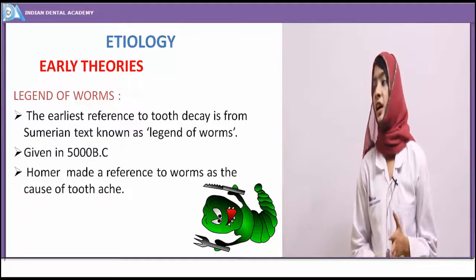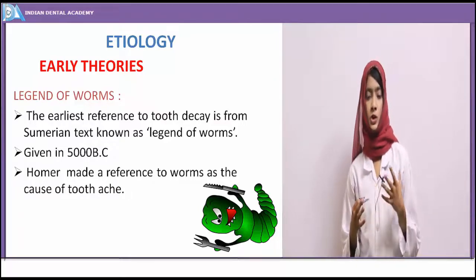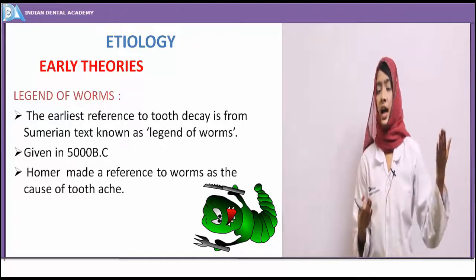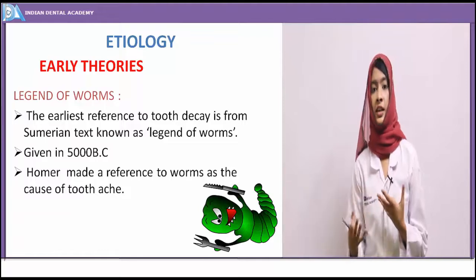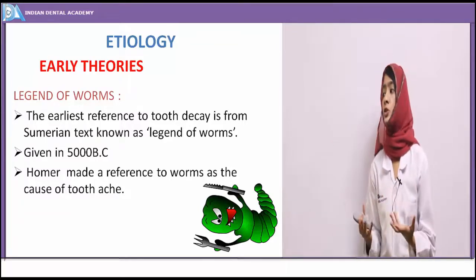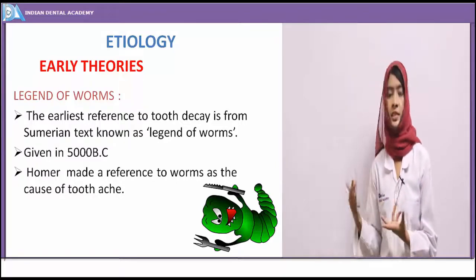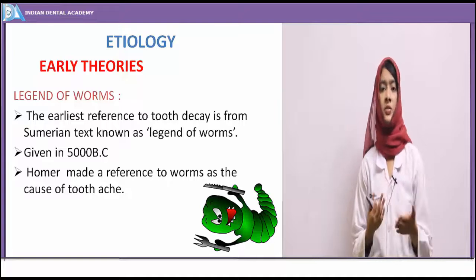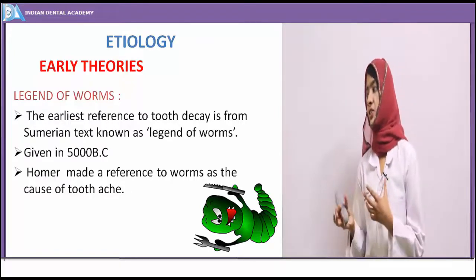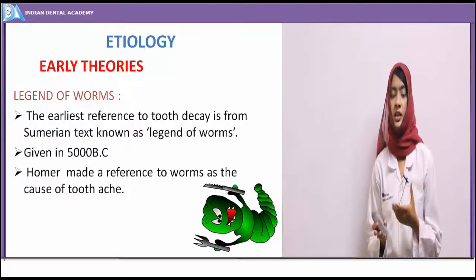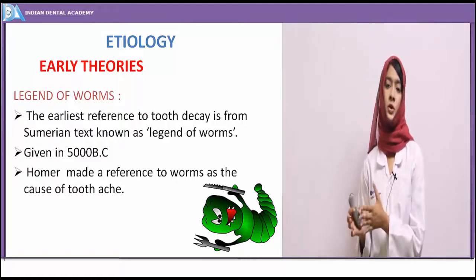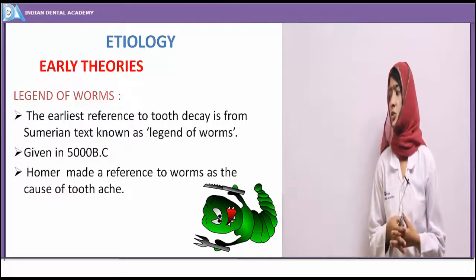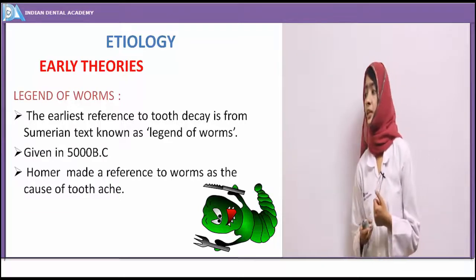We will now study the etiology of dental caries. Dental caries is a dynamic process attributed to a multitude of factors responsible for both initiation and progression of caries. Many theories have been proposed. The first is the Legend of Worms theory: an ancient Sumerian text gave reference to this theory, stating caries was caused by worms. This is evident from the writings of Homer, who made reference to caries as a cause of toothache.